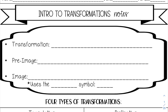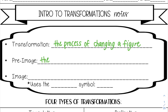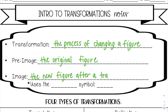Let's go over some vocabulary first. A transformation is the process of changing a figure. A pre-image is the original figure before you have completed any transformations — it's the figure that you start with in a problem. The image is the new figure after a transformation, and it will use something called a prime symbol, which is basically a little apostrophe after each point.